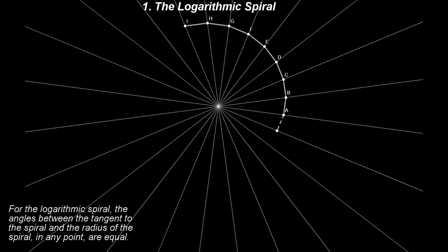1. For the logarithmic spiral, the angles between the tangent to the spiral and the radius of the spiral in any point are equal. Let's consider this specific logarithmic spiral with the angles between the tangents and the radius equal with 90 degrees.